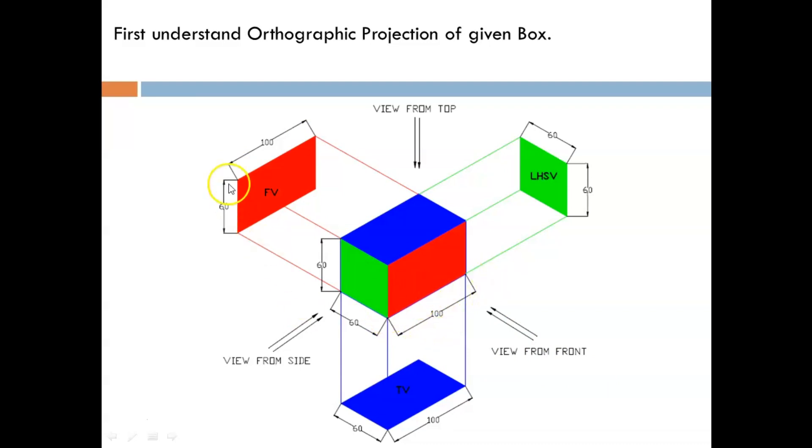If you see from the front, you will get a front view of 100 as length and the height as 60. When you see from the top, this blue color surface will appear with dimensions of 100 and 60. Same way, you can plot the side view.